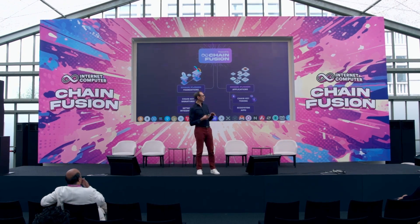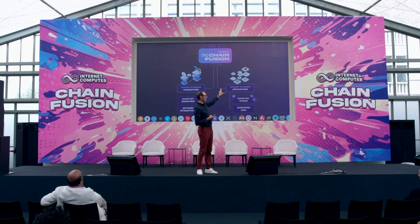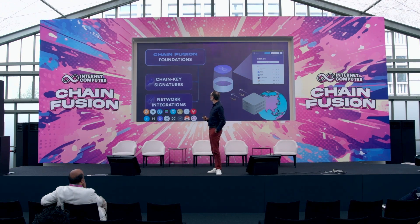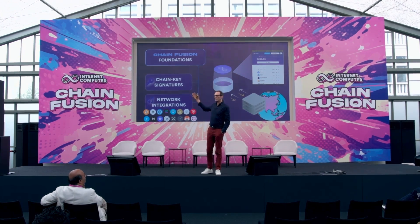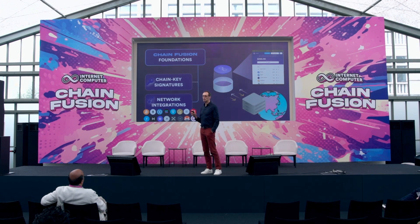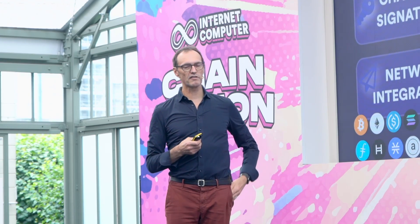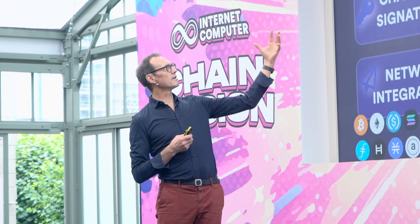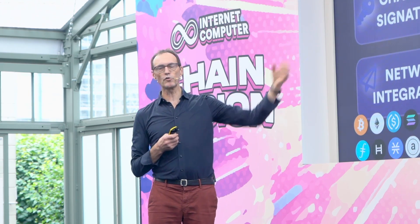For the rest of the day we'll mostly talk about the left-hand side, but in this intro I want to focus a bit on the right-hand side. At the protocol level, Chainfusion is chain key signatures and network integrations. On the other hand, we have ICP smart contract properties like serving web assets directly to users' browsers.